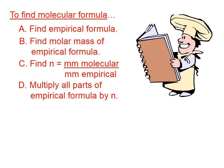Then, we need to calculate an integer number by taking the molar mass of the molecular formula divided by the molar mass of the empirical formula. And finally, we need to multiply all parts of the empirical formula by that integer.